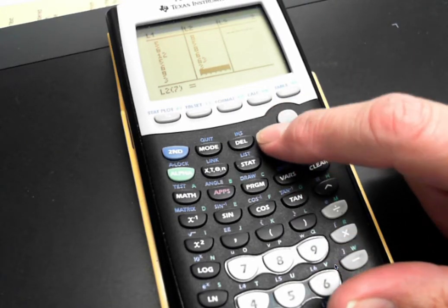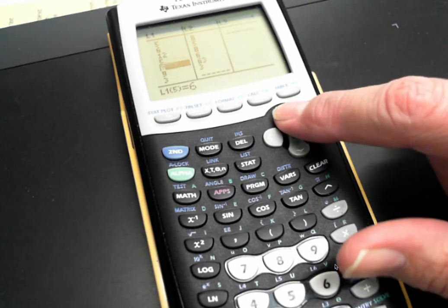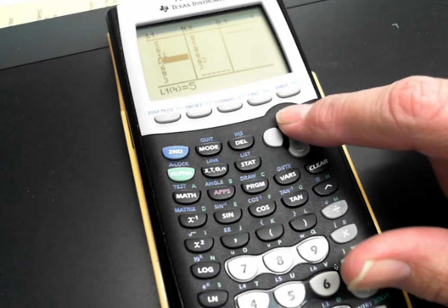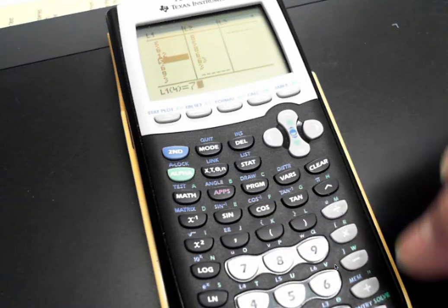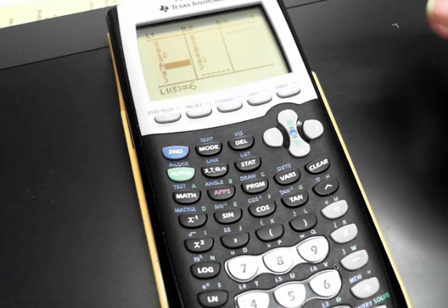If you make a mistake, you can arrow over to that button. If I have a five here and really wanted a seven, just hover on it, hit seven, hit enter, and it changes the five to a seven.